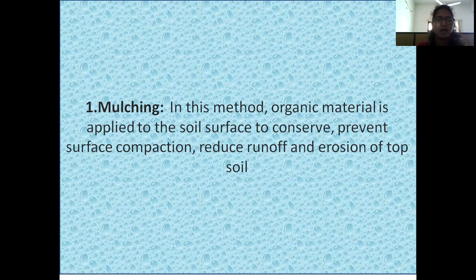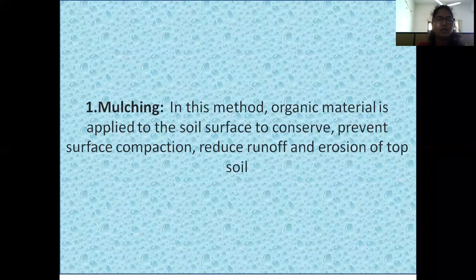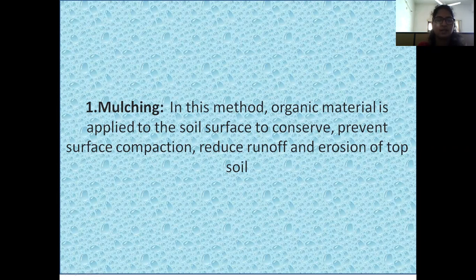Examples of organic mulches are wood chips, cocoa bean hulls, crushed corn crops, leaves, manure, and newspaper. Inorganic mulches include clay aggregates, weed barrier fabrics, and recycled rubber tires.